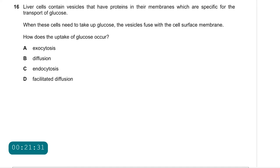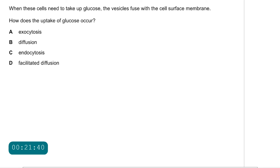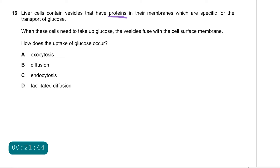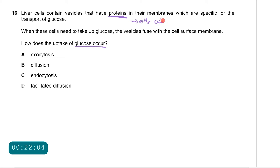Question 16: liver cells contain vesicles that have proteins in their membranes specific for the transport of glucose. When these cells need to take up glucose, the vesicles fuse with the cell's surface membrane. Membrane proteins are always involved in either active transport or facilitated diffusion. Therefore the answer is D — facilitated diffusion. Many candidates chose exocytosis, but since membrane proteins are mentioned, facilitated diffusion is the correct option.